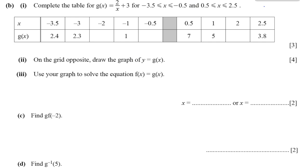Resume question number three, part B. Complete the table for g(x) = 2/x + 3 for values of x between -3.5 and -0.5, and between 0.5 and 2.5. They have a disjointed range here because there's an x in the denominator. The function cannot take certain values. The x value cannot be 0, or we'd have 2 divided by 0, which is undefined. That's why you have a disjointed graph and this is shaded.